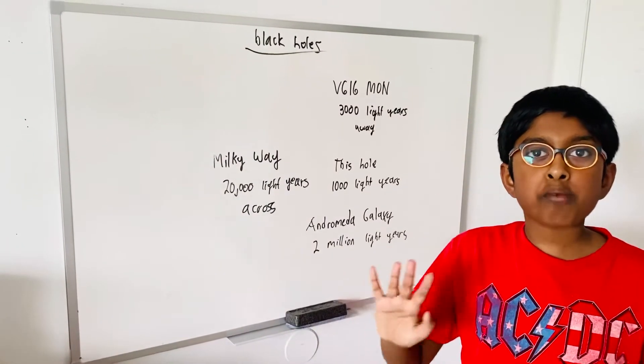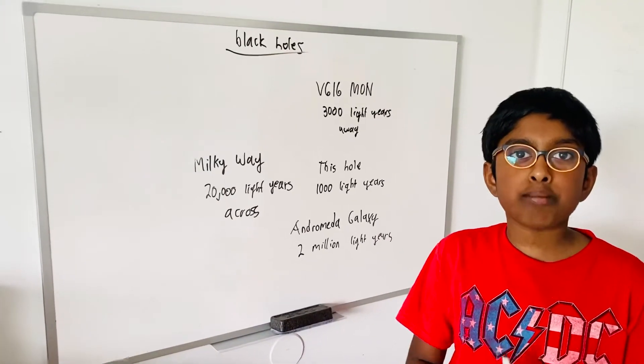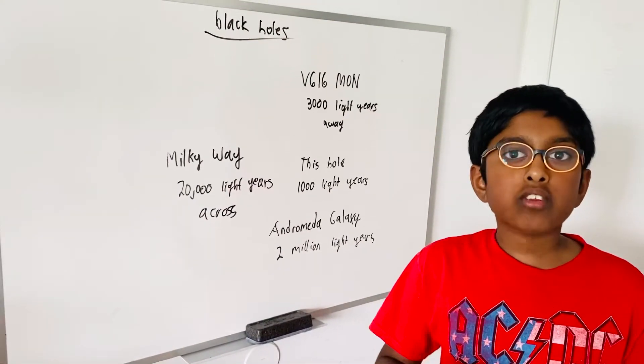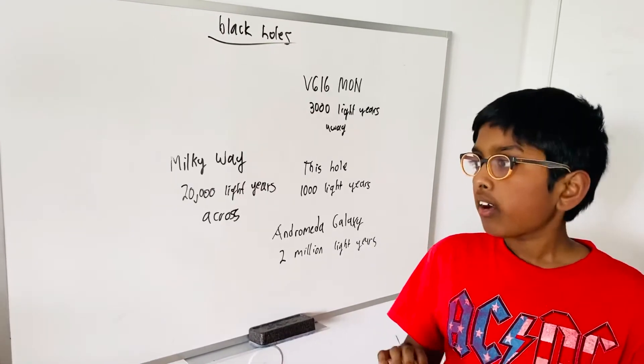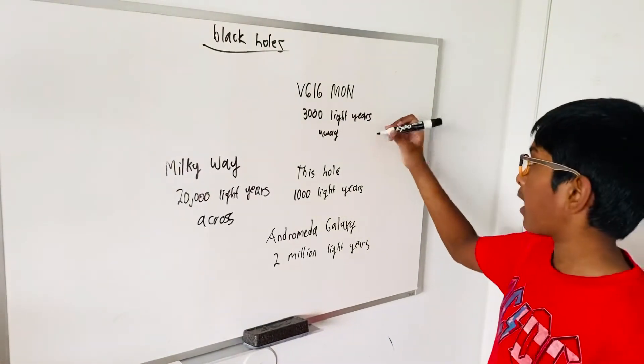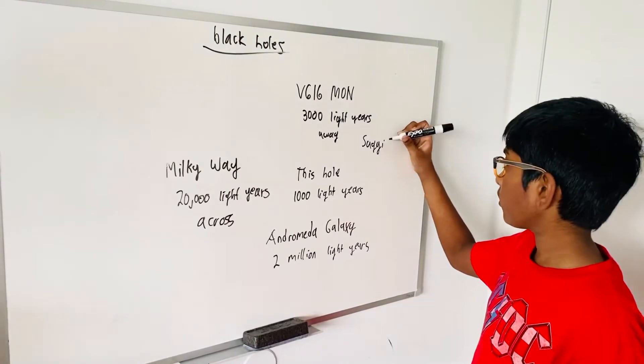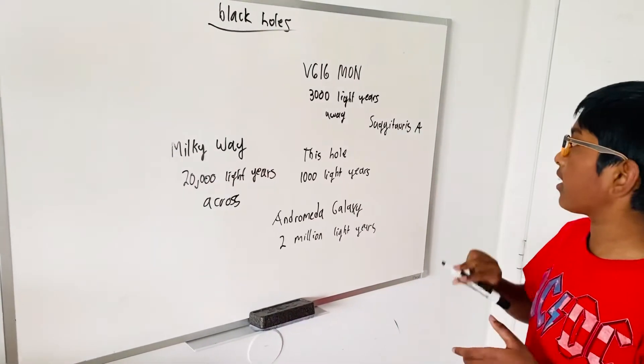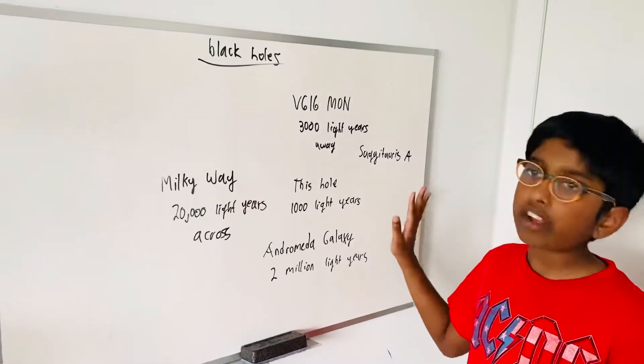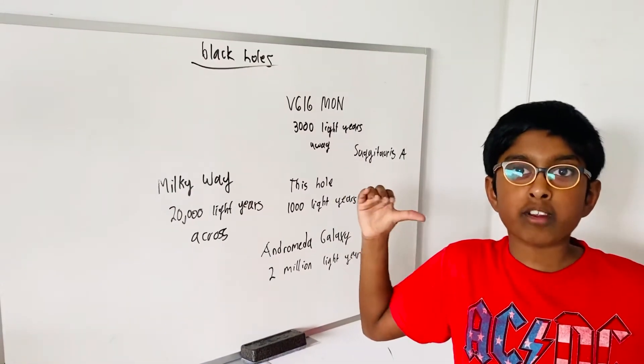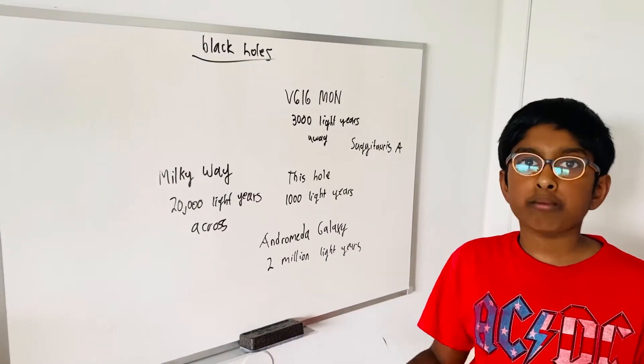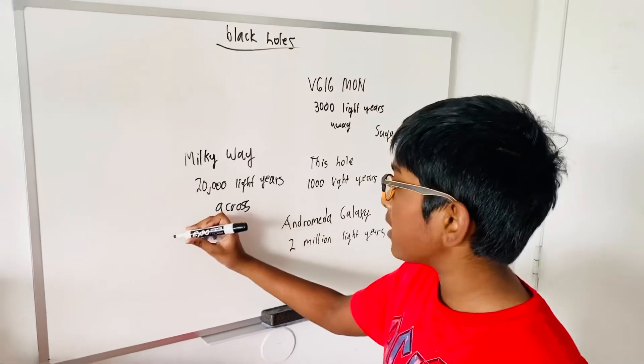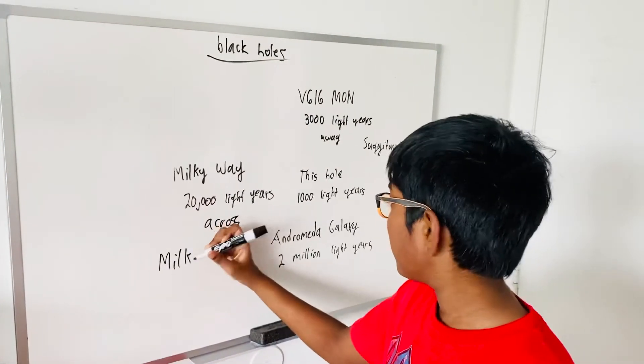When that big collision happens, there is a supermassive black hole in the middle of Andromeda galaxy. It may cause damage to Earth. Our supermassive black hole is called Sagittarius A. When these two galaxies collide, it will form a new galaxy called Milkromeda. It will become a much bigger galaxy.